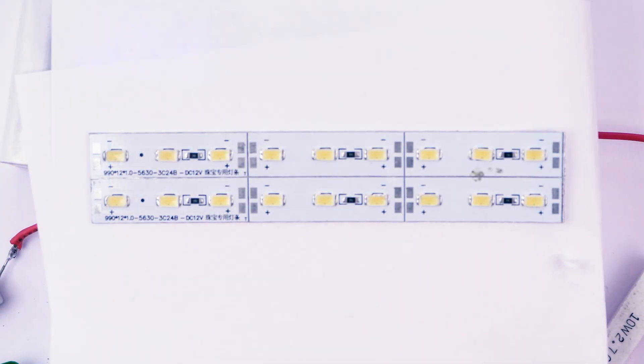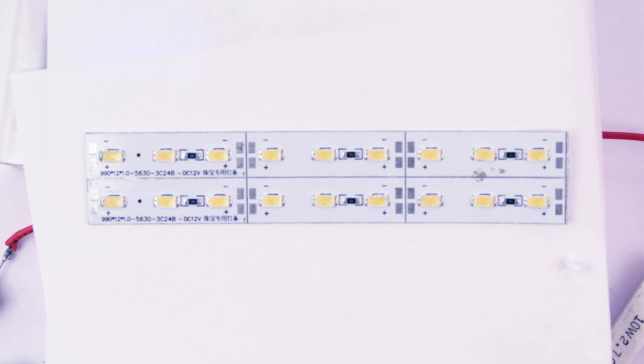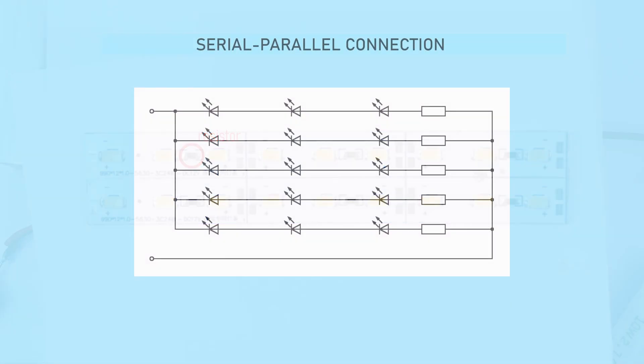This is the reason why 12V LED strips usually have three diodes connected in series with a resistor. Each LED gets a maximum of 4V in this case. Then these triodes are connected in parallel, and each has its own resistor.